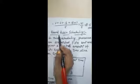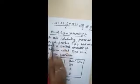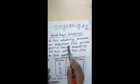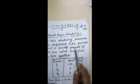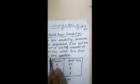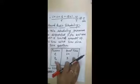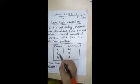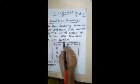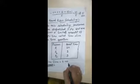The next scheduling is round-robin scheduling. In this scheduling, processes are dispatched FIFO — first in, first out — but are given a limited amount of CPU time called a time slice or time quantum. Processes are allocated to the CPU on a first-come, first-served basis, but only for the duration of the time slice or time quantum.